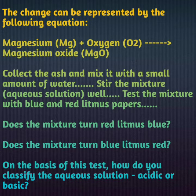Now collect the ash and mix it with a small amount of water — उस ash को collect करके उसका dilute solution बना लेंगे पानी मिलाकर. Stir the aqueous solution well. Test the mixture with blue and red litmus paper. उस magnesium oxide के solution को blue और red litmus paper से test करेंगे — हमें यह test करना है कि magnesium oxide acidic है nature में या basic है. Does the mixture turn red litmus blue, or will it turn blue litmus red?